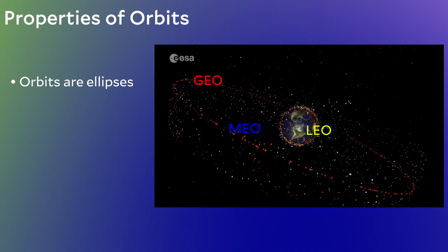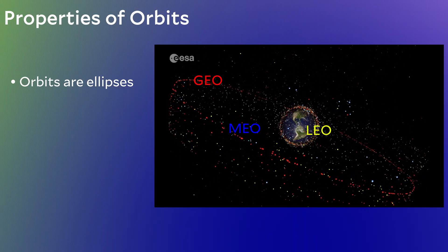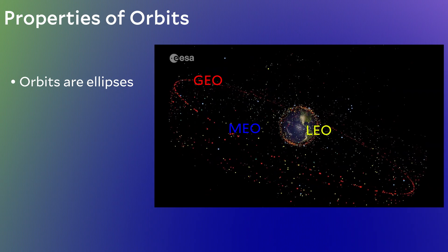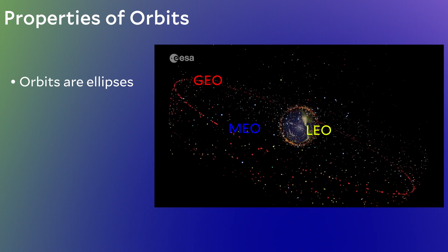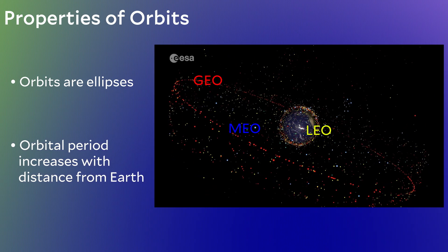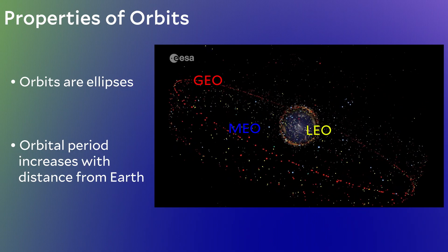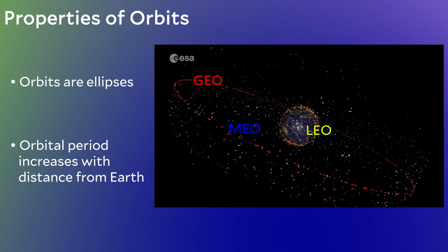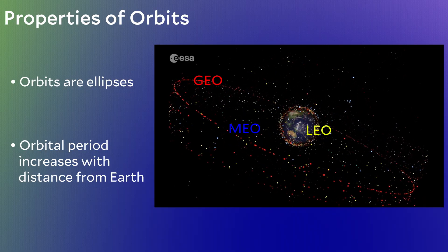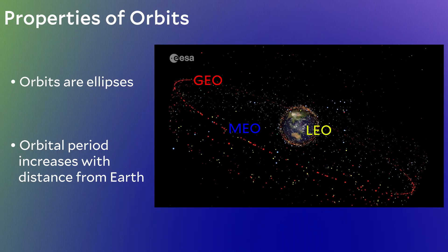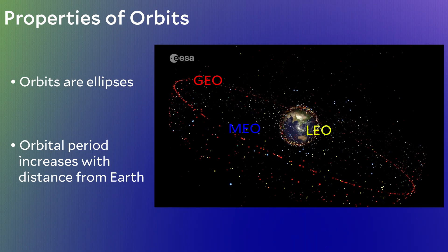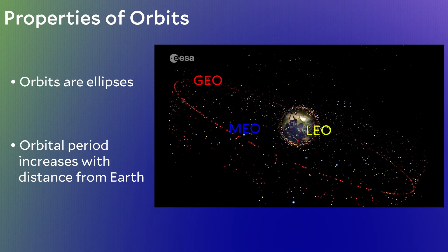Examining this animation again, the second thing to notice is the time it takes to complete one orbit — we'll call this the orbital period. The orbital period increases the further you go from Earth. Objects orbiting nearest to Earth complete a full orbit faster than objects orbiting further out. There's a relationship between the distance from Earth and the orbital period.